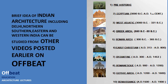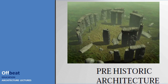In this history of architecture series we will go through lectures on prehistoric architecture, Egyptian architecture, West Asiatic architecture, Greek architecture, Roman architecture, Early Christian, Byzantine, Romanesque, Gothic, and Renaissance. In the next lecture we will discuss prehistoric architecture.